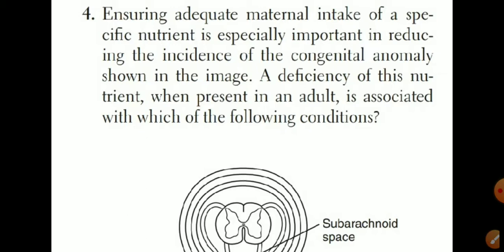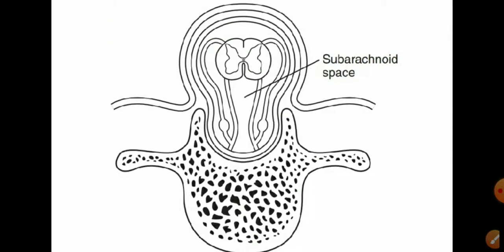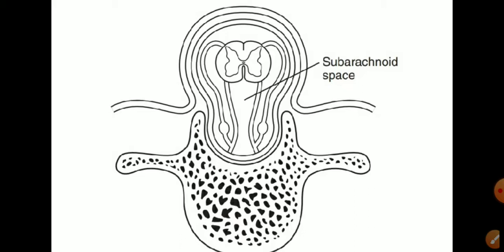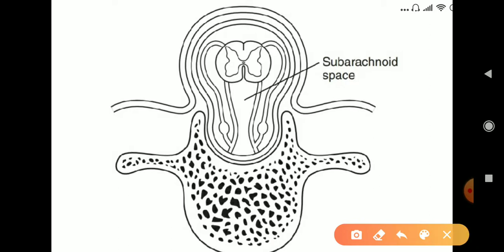They are asking about a nutrient deficiency that leads to a condition shown in this image — an embryological or neurogenesis defect. We can see this is the vertebral column and here is the spinal cord. The spinal cord should be inside, but it protrudes out of the vertebral column. So this condition is known as spina bifida, and when the spinal cord itself is outside and protruded out, that is called myelomeningocele.